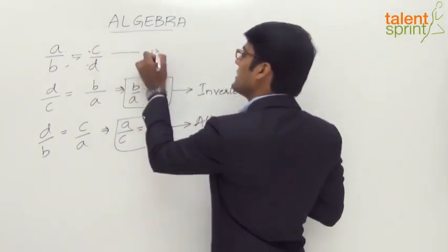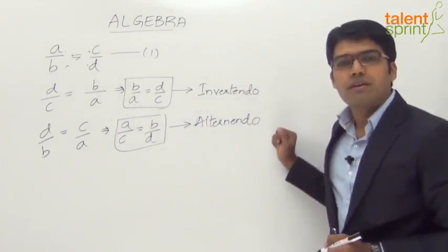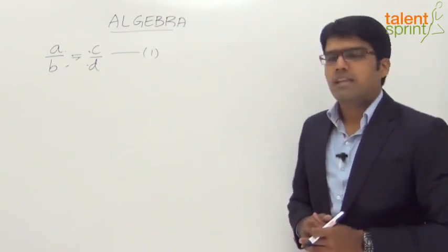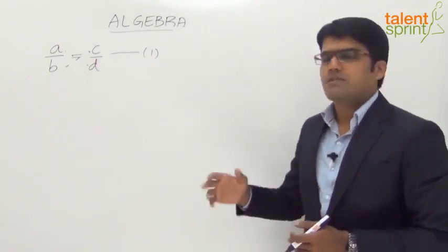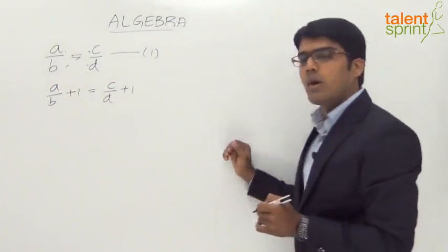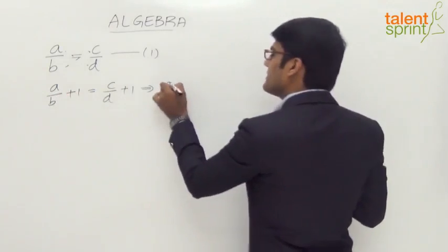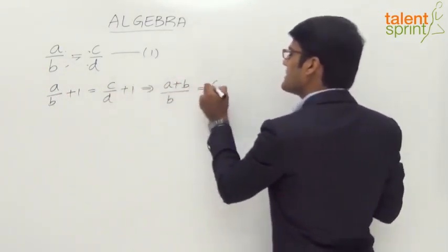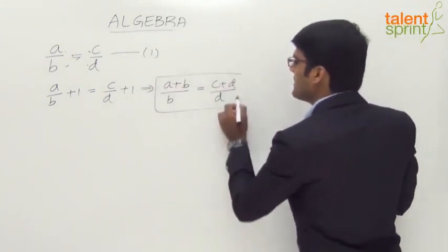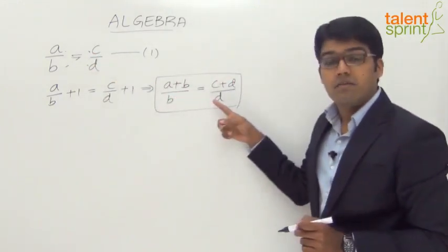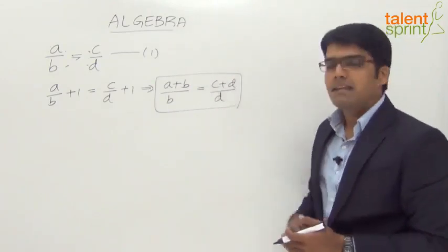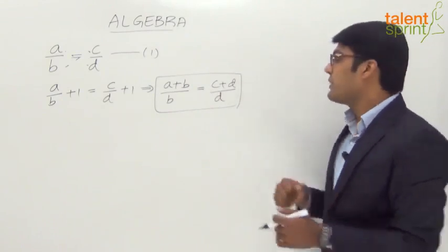So from the basic equation a by b equals c by d, we have got two new relationships: invertendo and alternendo. Let us now look at the next relationship. Let us add 1 on both sides of the given equation. We get a by b plus 1 equals c by d plus 1, which simplifies to a plus b by b equals c plus d by d. The denominators get added to the numerators. This operation is known as componendo.